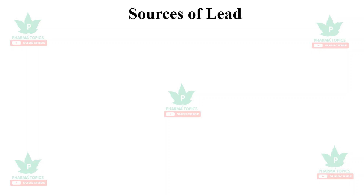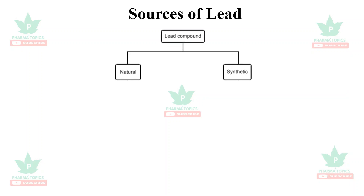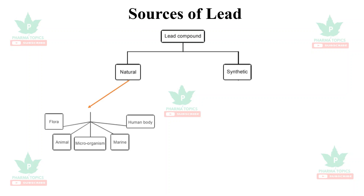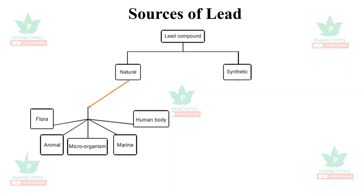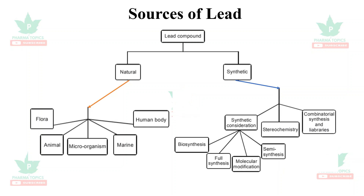The lead compounds can be obtained from natural sources or synthetic sources. Natural sources include microbial flora, animal sources, microbes, marine sources, or the human body. Synthetic sources include biosynthesis, full synthesis, molecular modification, semisynthesis, stereochemistry, combinatorial synthesis, and obtaining leads from data libraries.